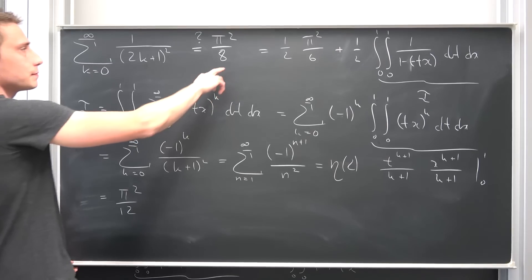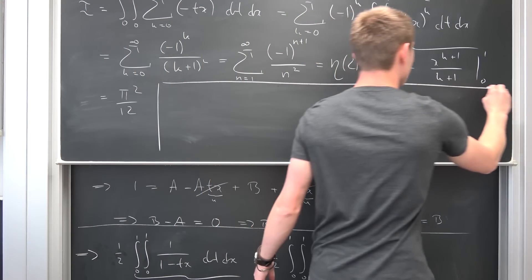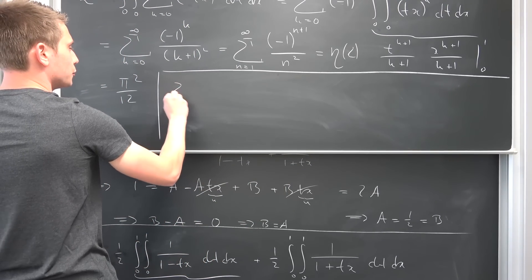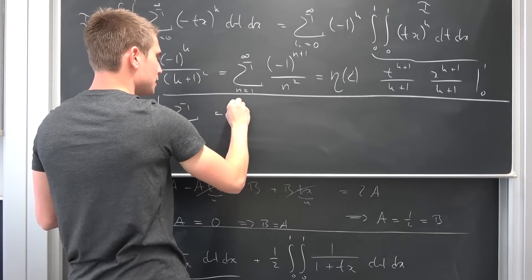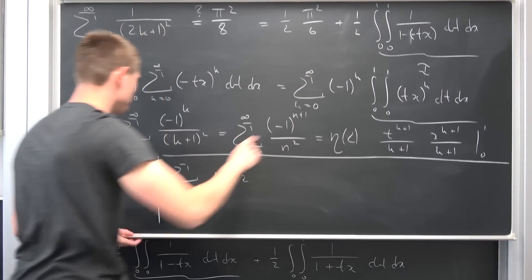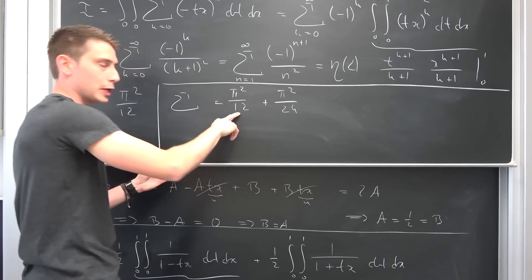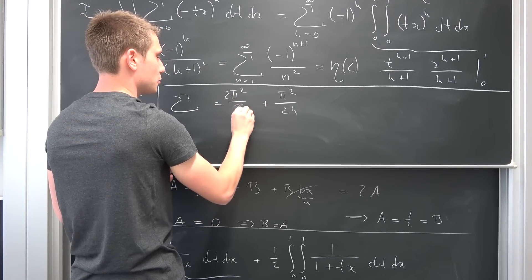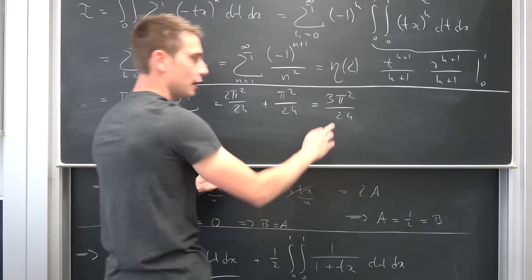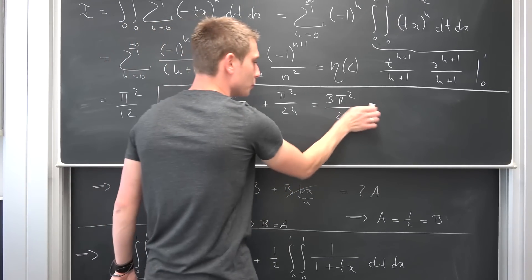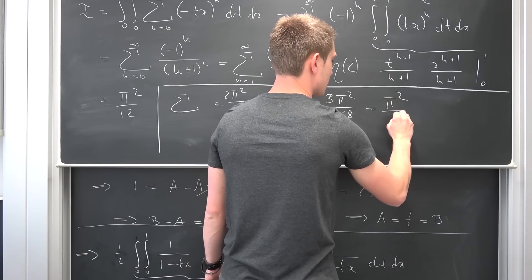Overall, our infinite sum is nothing but one half times pi squared over 6 plus one half times pi squared over 12. That gives pi squared over 12 plus pi squared over 24, which is 2 pi squared over 24 plus pi squared over 24, equaling 3 pi squared over 24. Cancelling, this leaves us with our desired result: pi squared over 8.